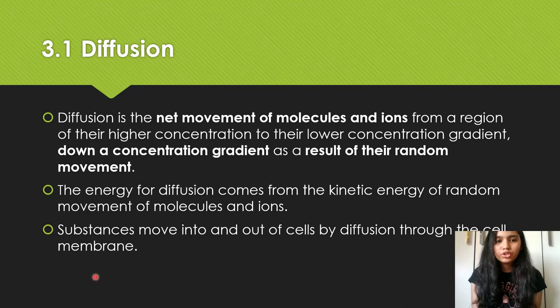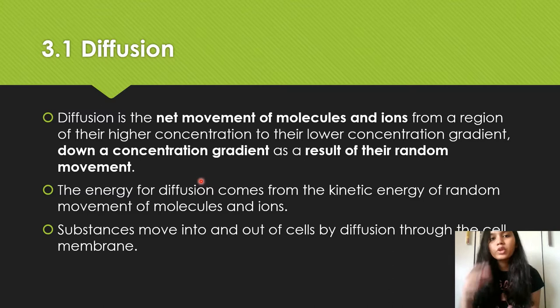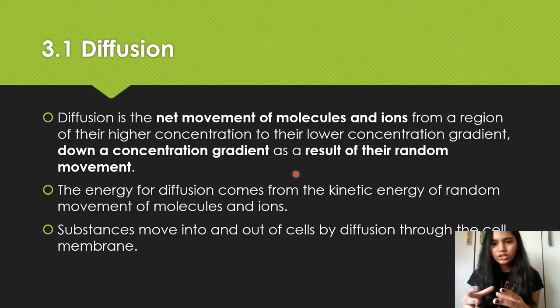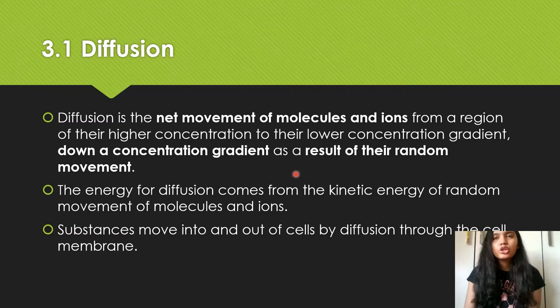So diffusion — the first line here is the definition of diffusion. It is the net movement of molecules and ions from a region of their higher concentration to a region of their lower concentration as a result of their random movement. I've highlighted the parts of the definition that give you marks. Net movement of molecules and ions is one mark. From a higher concentration to lower concentration, or down a concentration gradient, is one mark. And as a result of their random motion is your third mark.